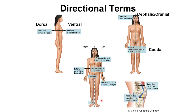Proximal is toward the point of origin, and distal is away from the point of origin. For example, your leg originates up at the hip — closer to that point of origin is proximal, and farther away, toward the foot, is distal.